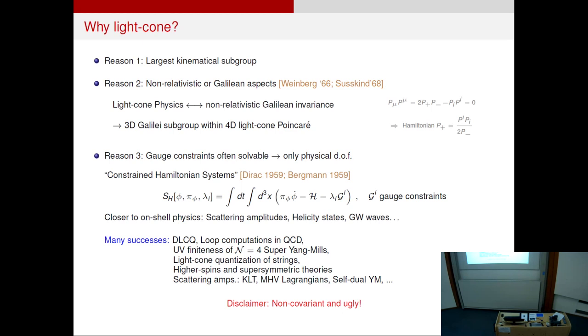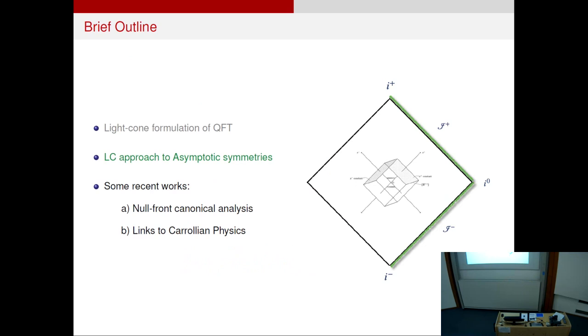But as a disclaimer, I would like to remind you that this is a non-covariant formulation, so some expressions are going to be a bit ugly. It's not as nice as a covariant formulation. But what I want to show you is how to approach the topic of asymptotic symmetries or how boundary conditions appear and so on in this light cone framework. And then I'll tell you about some recent works depending on how much time I have.